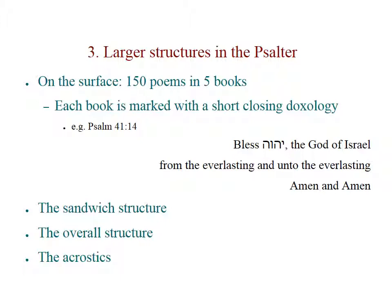Now, briefly, let's look at the larger structures in the Psalter. We have already hinted that these are observable. On the surface, we have 150 poems in five books. Each book is marked with a short, closing doxology — the example is given from Psalm 41:14, the last verse of Book 1. The books are also arranged in a sandwich structure, and there's also an overall structure curiously managed by the acrostics.